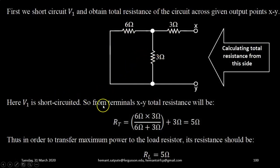When V1 is short-circuited from terminals XY, the total resistance will be 3 ohm plus the parallel combination of 6 ohm and 3 ohm. So, total resistance RT will be equal to the parallel combination of 6 and 3 ohm: 6 into 3 upon 6 plus 3, plus the 3 ohm resistance. That comes out to be 5 ohm.